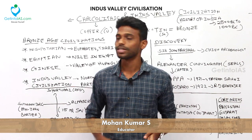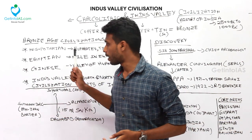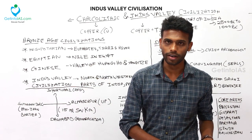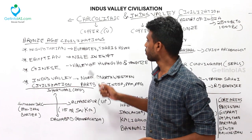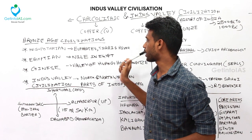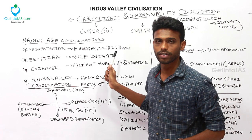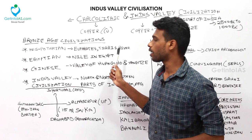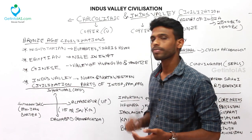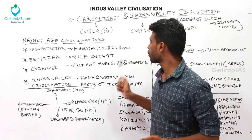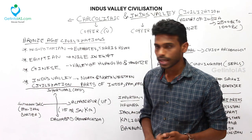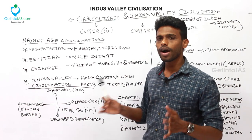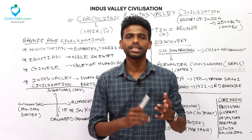The Indus Valley Civilization belongs to the Bronze Age — it is one among the four major Bronze Age civilizations of the world. Those civilizations are: Mesopotamian, Egyptian, Chinese, and Indus Valley. The Mesopotamian civilization flourished around the Euphrates and Tigris rivers in West Asia; Egyptian civilization around the Nile valley; Chinese civilization around the Huang Ho and Yangtze rivers; and Indus Valley Civilization in northern and northwestern India.